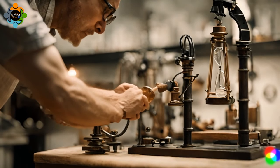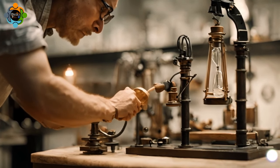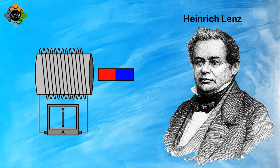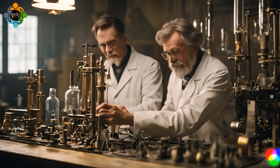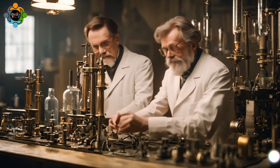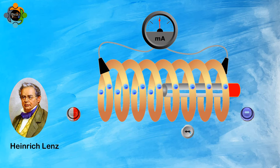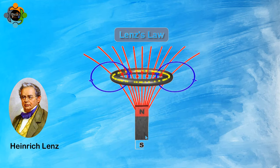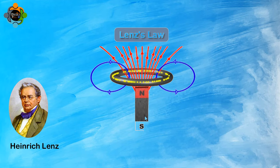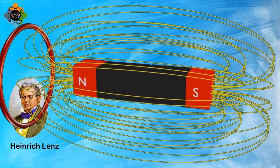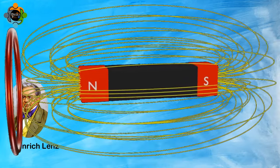First and foremost, let's take a step back in time to understand the origins of Lenz's Law. Named after the Russian physicist Heinrich Lenz, this law was formulated in the early 19th century as a result of his experiments with electromagnetic induction. Lenz's Law ultimately became a cornerstone of electromagnetic theory and revolutionized our understanding of how electric currents and magnetic fields interact.